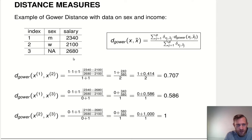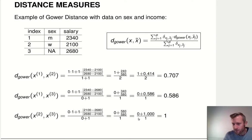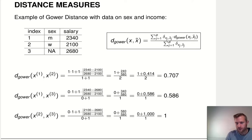For the sex variable, the distance between objects one and two is one, since they differ. For the distance between objects one and three in terms of sex, the information about sex is missing, so it doesn't come into the sum, and we only divide by one rather than two — that's what the delta terms handle. The Gower distance is nice because it gives us a way to compute distances even for features that aren't numeric and even when some values are missing.